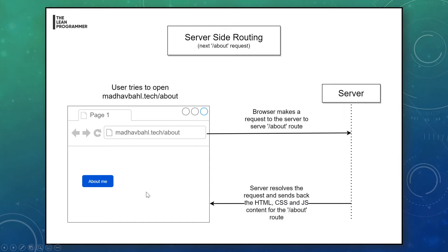Now what happens when the user clicks, say, an 'About Me' button? The browser requests madhavbehel.tech/about from the server. Again the same thing happens — the server looks up its route definitions to check if a /about route is defined. If it is, it processes the request, sends back the response for the /about route, and the browser gets the HTML, CSS, and JavaScript for that route and shows it on screen.